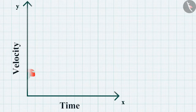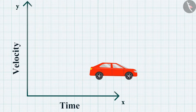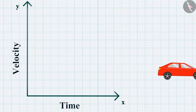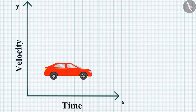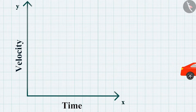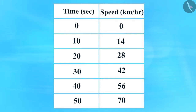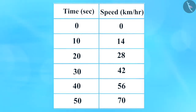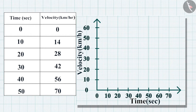Now let us consider accelerated motion. In uniformly accelerated motion, velocity changes by equal amounts in equal time intervals. Suppose a train driver records the velocity of the train starting from rest at each 10-second interval. The resulting velocity-time graph is again a straight line.